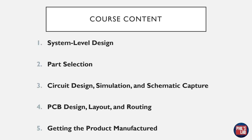Once we've chosen our main parts, we move to circuit design, where we design analog and digital circuitry for microcontrollers, anti-aliasing filters, analog frontends, and so on. We'll also simulate part of our analog circuitry in LTSpice, and I'll show you in detail how to do that. Then comes schematic capture — transferring all of our circuitry into KiCad version 6. Once we have our schematic with all the symbols and footprints, we can move over to PCB design, layout, and routing.